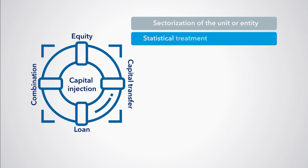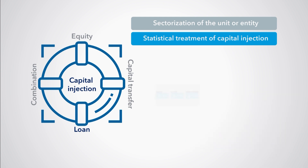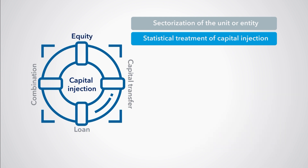The second issue is the appropriate statistical treatment of the capital injection — in other words, as a loan, a capital transfer, an equity injection, or a combination of these. If a loan is involved, government and, more broadly, public sector debt would be affected. If an equity injection is involved, government and public sector debt would not be affected because equity is a non-debt instrument.